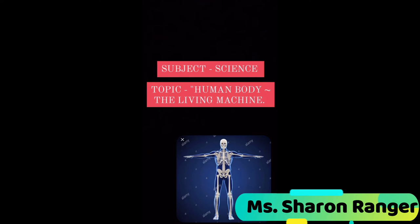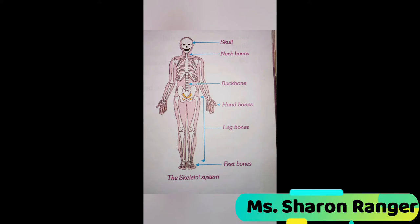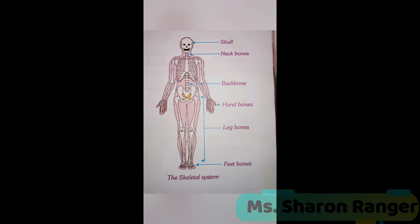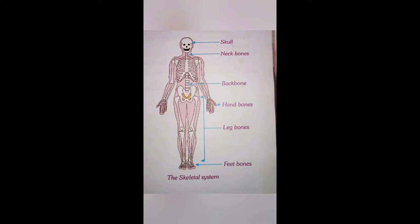The first one we have is the skeletal system. Our body is like a house - a house needs pillars and beams to build up. Similarly, the human body is also supported by a framework of hard and strong bones. This framework of hard and strong bones is known as the skeletal system. The skeleton helps us to stand straight and move forward.